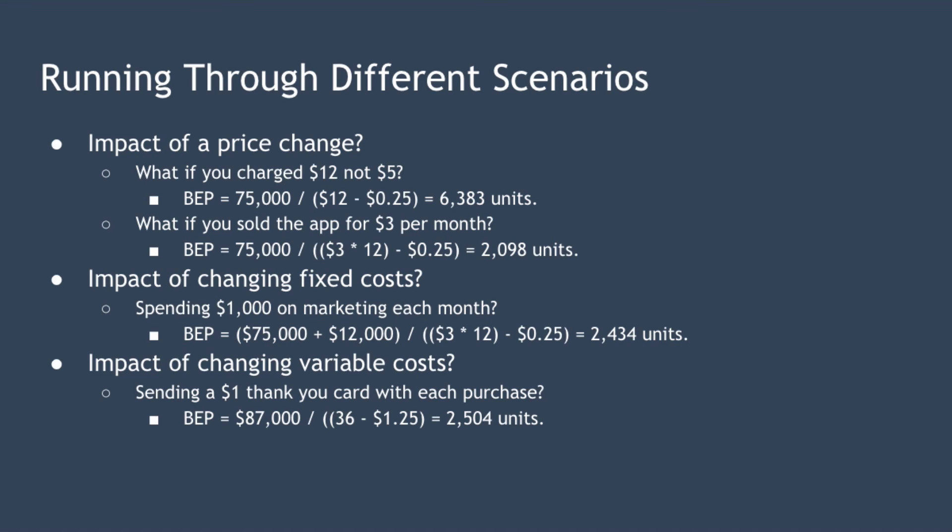Finally, let's take a quick look at changing our variable costs. Suppose you want to send a personal thank you card by mail to everyone who purchases the app. We can adjust our break-even analysis to understand how that impacts profitability. If each card costs $1, then we'll need to sell 2,504 units in order to reach break-even point.